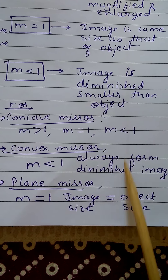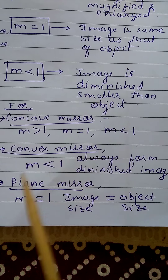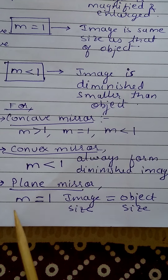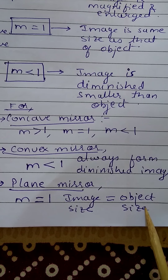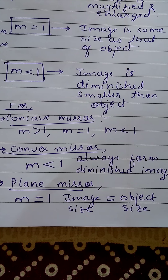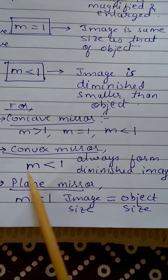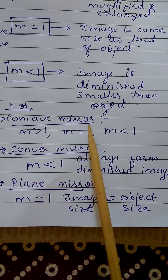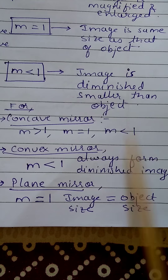For a plane mirror, this is very important: m is always equal to 1 because the image size is equal to the object size. For a convex mirror, m is less than 1. And for a concave mirror, all three possibilities are there.